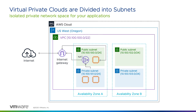Even though a VPC is associated with an AWS region, each subnet in a VPC can exist in just one AZ. When you create a subnet, you must designate the AZ. If you're planning to access or incorporate native AWS services, such as S3 object storage, which is useful for backing up your workloads, you can also create endpoints for those services in your VPC.